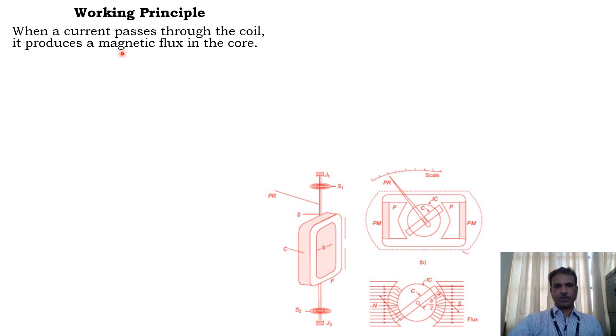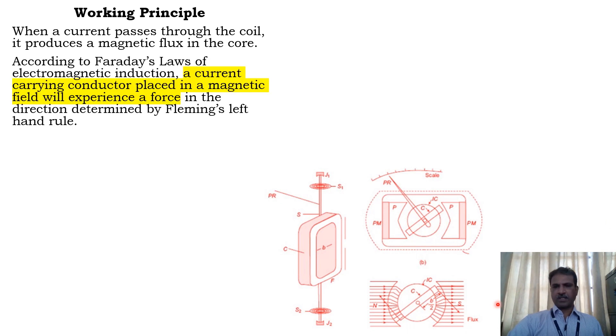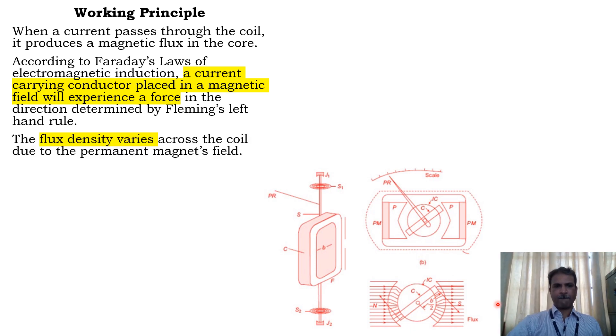When a current passes through the coil, it produces a magnetic flux in the core. According to Faraday's laws of electromagnetic induction, a current-carrying conductor placed in a magnetic field will experience a force in the direction determined by Fleming's left hand rule.